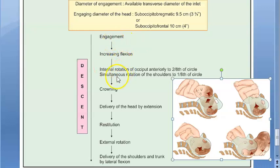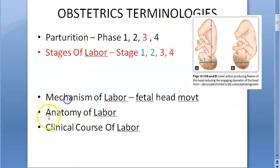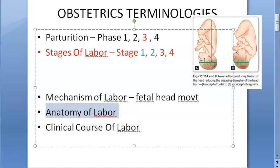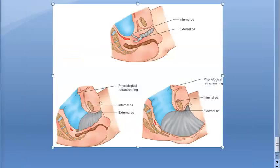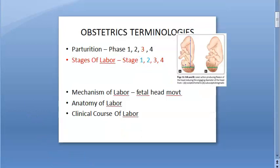If they ask anatomy of labor, they are talking about the changes in pelvic structures — the urethra, the bladder, those relations. If they ask clinical course of labor, you explain pain, dilatation of the cervix, and details of each stage.